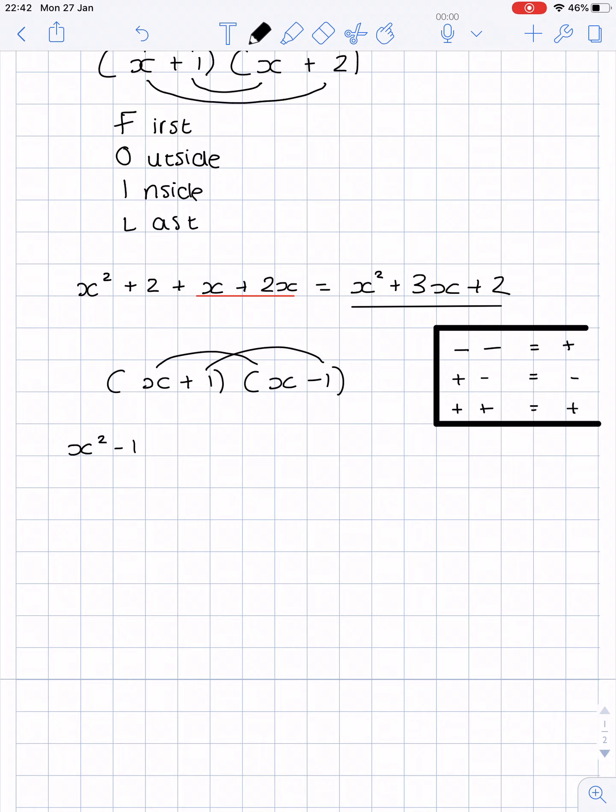So the operations are always positive unless the operations are different. So here we have plus and minus so that's going to be negative. Now doing the inside we have plus x and minus x so that leaves us with x squared minus 1.